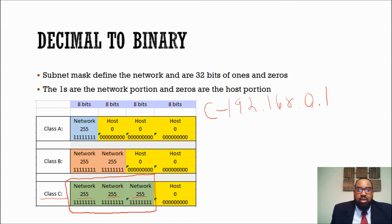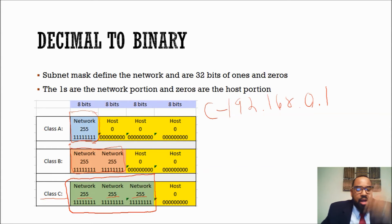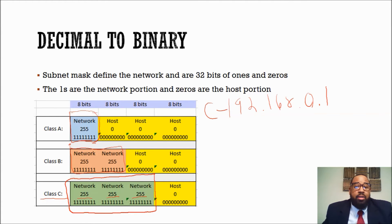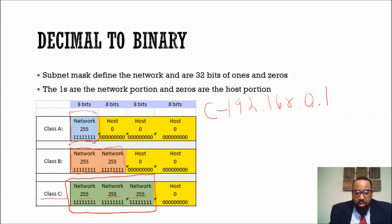Class A is identified by the first 8 bits, and class B is identified by the first 16 bits. When defining the subnet mask, the first 8 bits of a class A network define the subnet mask, and the last 24 bits identify your host. For class B, the first 16 bits identify your network and the last 16 identify your host. For class C, the first 24 bits identify your network and the last 8 bits identify your host. An IP address is 32 bits broken up into 4 octets of 8 bits — ones and zeros.